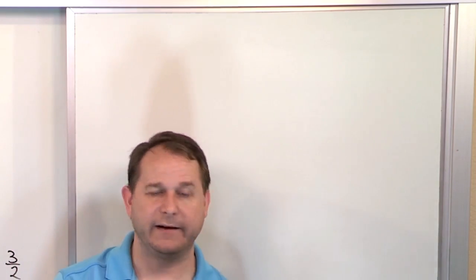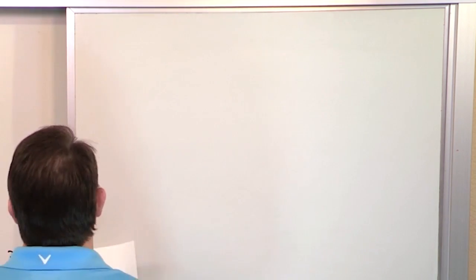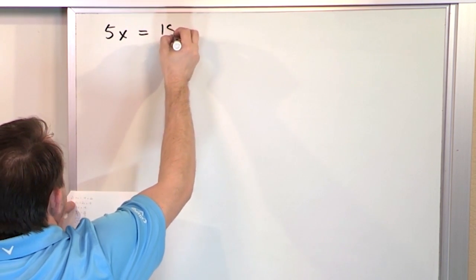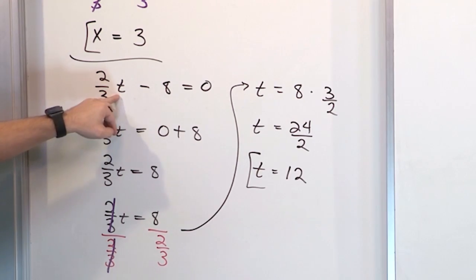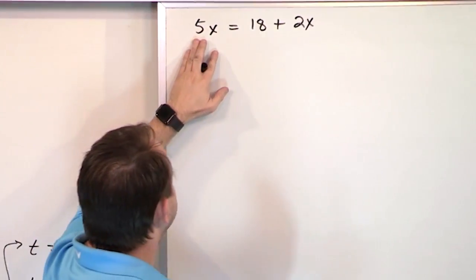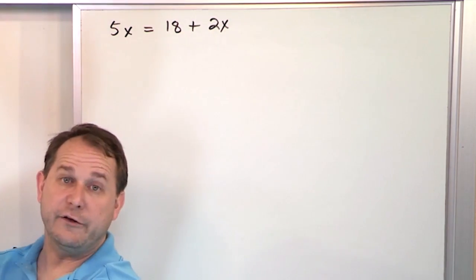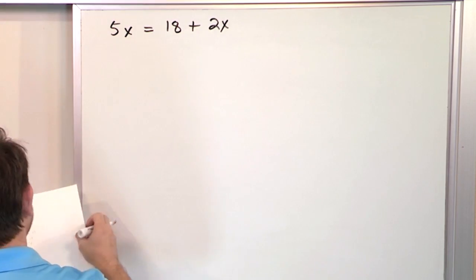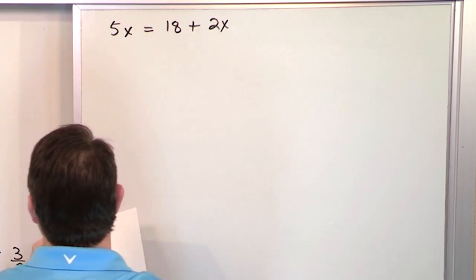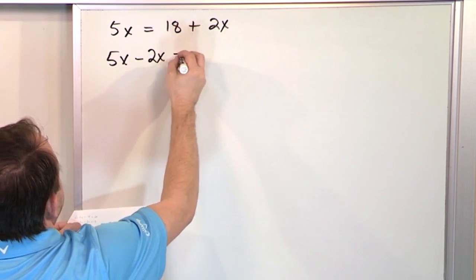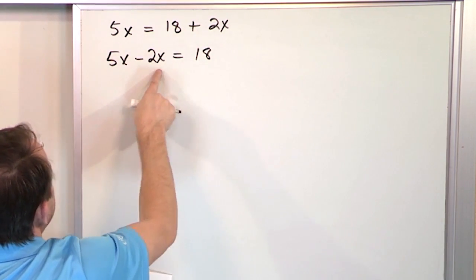The next equation is 5x equals 18 plus 2x. Here the variable appears on both sides. The goal is to get all the variables on one side and everything else on the other side. So let's subtract 2x from both sides. On the left, 5x minus 2x gives 3x; on the right, 2x disappears, leaving 18.